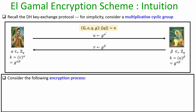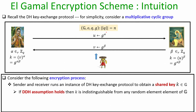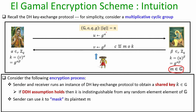Now consider the following encryption process: the sender and receiver first run an instance of the Diffie-Hellman key exchange protocol to obtain a shared key K, which is a group element. If the DDH assumption holds in the underlying group — meaning the DDH problem is hard — then the shared key K is indistinguishable from any random element of the group. Now imagine Ram has a plaintext message M, which is a group element, and wants to encrypt and send it to Sita.